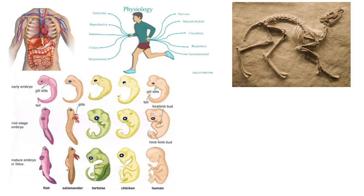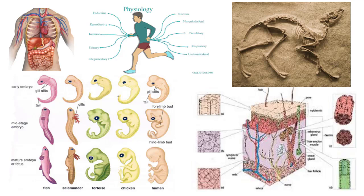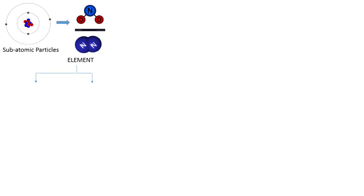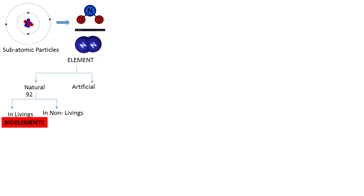In biological organization, subatomic particles assemble to form elements. If they are the same atoms, they form elements; if different atoms, they form compounds. Elements are of two types: artificial and natural. Of the 92 natural elements, they can be divided into non-living and living categories. The living elements are called bio-elements, of which there are 10, divided into major bio-elements, minor bio-elements, and trace elements. The major ones are carbon, hydrogen, and oxygen. Minor ones include sodium, potassium, and magnesium, while traces are in negligible amounts.